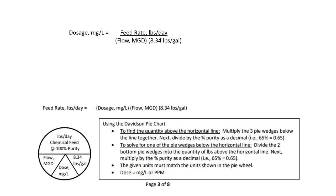Here we have rewritten our pounds formula to solve for dosage. Dosage in milligrams per liter is equal to the feed rate in pounds per day, divided by the flow in million gallons per day, times the standard of 8.34 pounds per gallon.